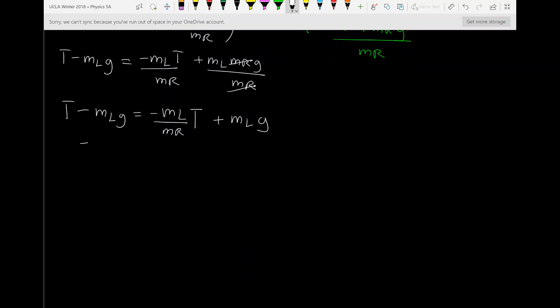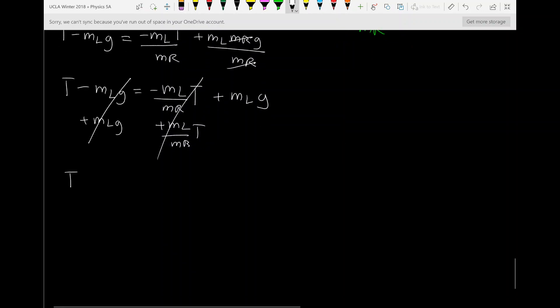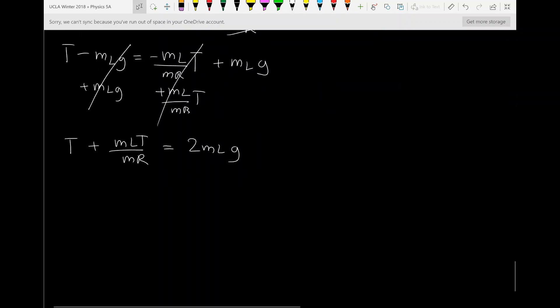Now I'm going to add ML G to both sides. And I'm going to add ML over MR T to both sides. So these cancel and these cancel. Now I have T plus ML T over MR equals 2 ML G. So, so far I hope that math makes sense. If not, just go back a little bit and think about each step. I'm just doing basic algebra, adding and subtracting.